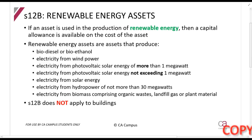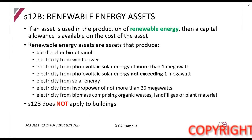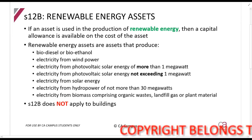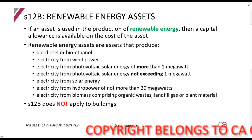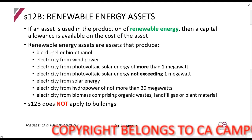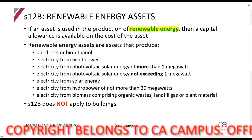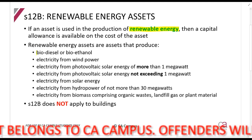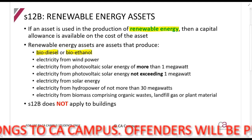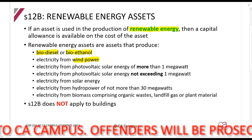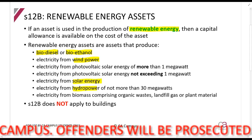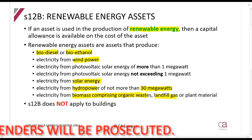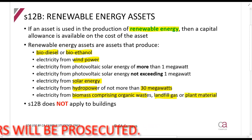Our next section is Section 12B, the renewable energy assets section. You get this allowance if you purchase a capital asset that is used in the production of renewable energy. Qualifying assets include those that produce biodiesel, bioethanol, electricity from wind power, electricity from solar power, electricity from hydropower of not more than 30 megawatts, and electricity from biomass comprising organic waste, landfill gas, or plant material.